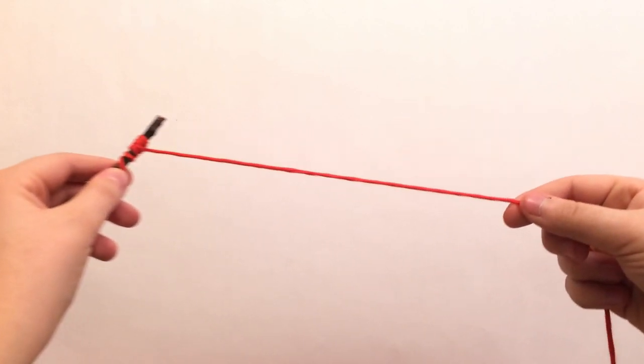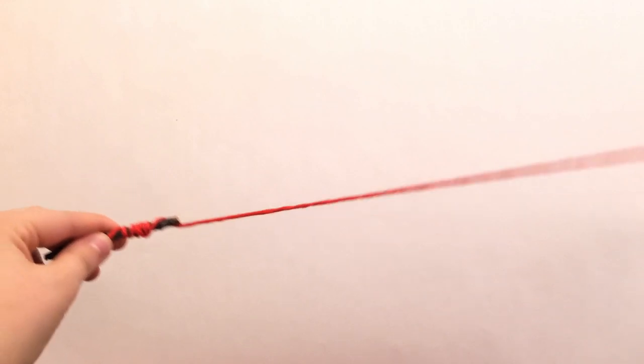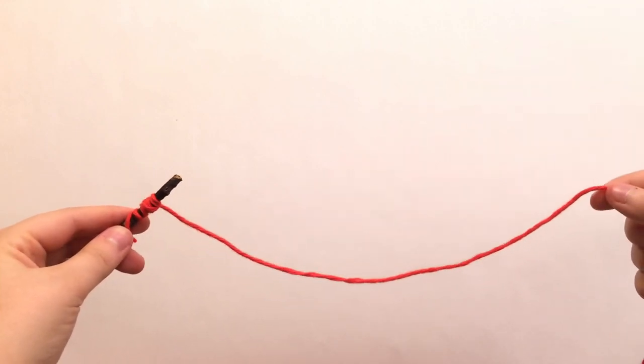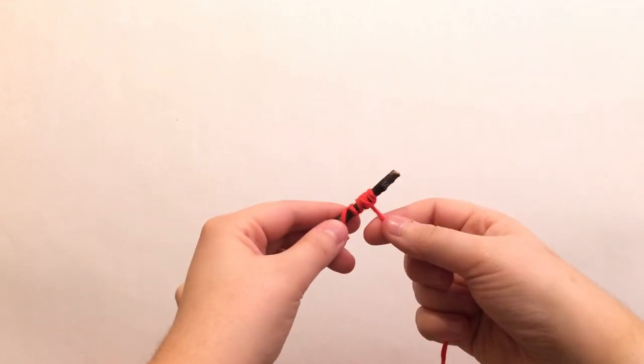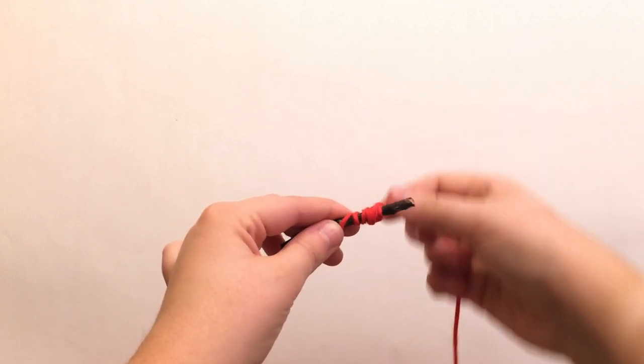Sometimes, the child may hold their hand really far away from the stick, which can make it difficult. So, you can show them that if they hold their hands closer to the stick, it can be a lot easier.